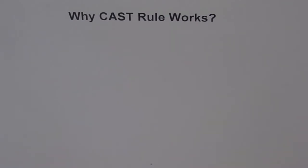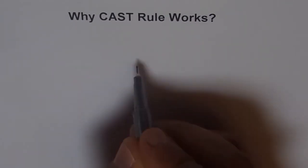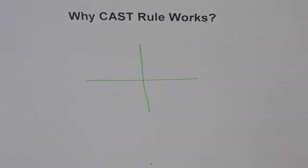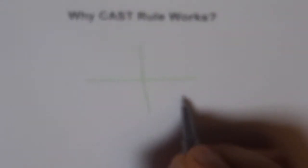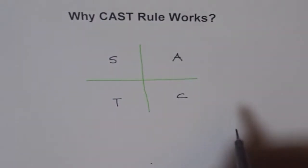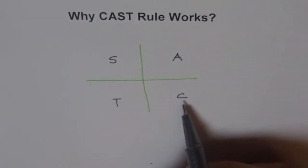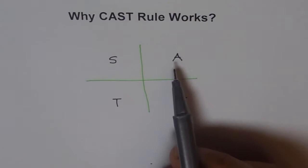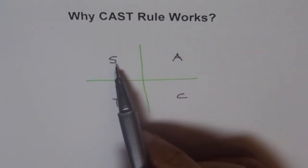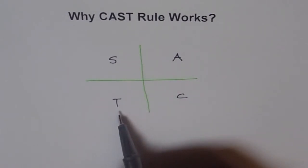Now let's see what it is and why it works. So basically, that's our coordinate plane, and what we say is that CAST rule is C, A, S, and T. It says in this quadrant cos is positive, all are positive in quadrant 1, in quadrant 2 sin is positive, and in quadrant 3 tan is positive.